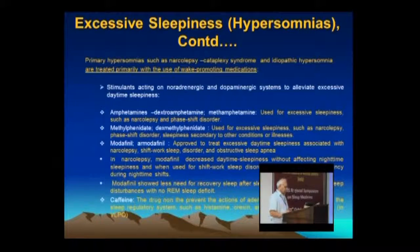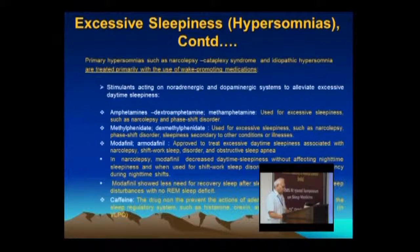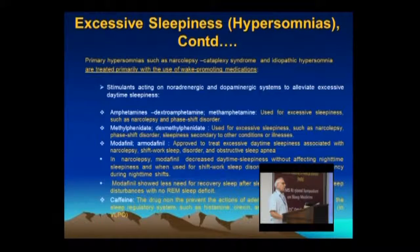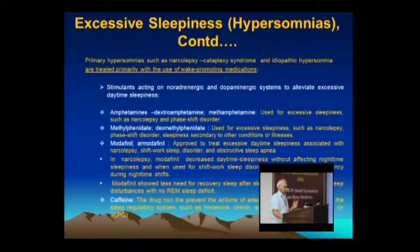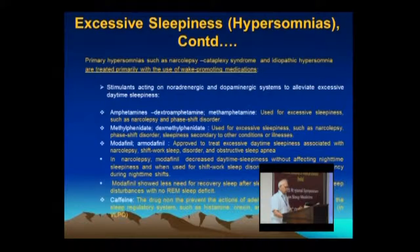Drugs for hypersomnia can be divided into groups. One group is stimulants acting on the noradrenergic-dopaminergic system — the amphetamines: methamphetamine and dextroamphetamine — used for excessive sleepiness such as narcolepsy and phase shift disorder. Methylphenidate, dexmethylphenidate, modafinil, and armodafinil all increase release of dopamine as well as norepinephrine in the brain. Amphetamines cause derangement of both dopaminergic and norepinephrine neurons leading to continuous release, and addiction or habituation is very common with amphetamines rather than with modafinil or methylphenidate.